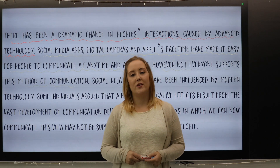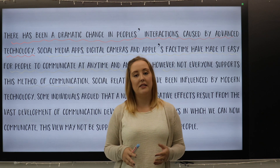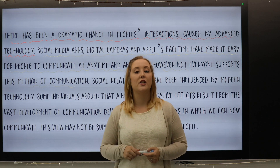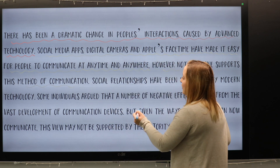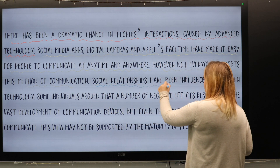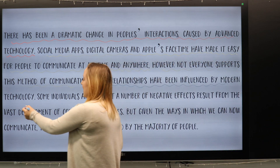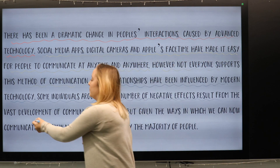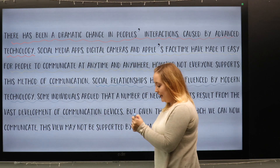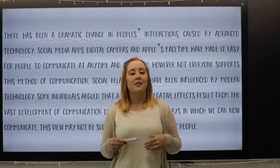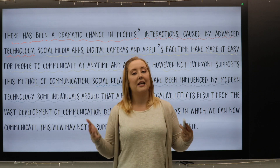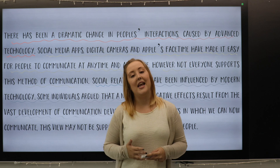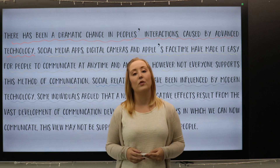After our bridge, we have our summary — the two to three sentences that give an overview of the topic. The sentences 'Social relationships have been influenced by modern technology. Some individuals argue that a number of negative effects result from the vast development of communication devices' form the overall summary of the essay, explaining very clearly that the essay is about social interactions and the negative effects technology has had on them.